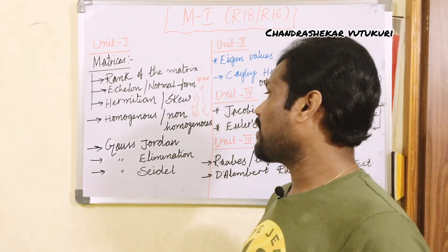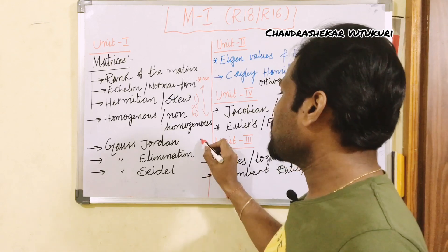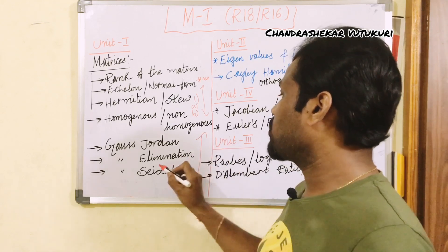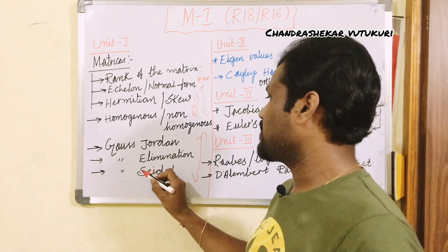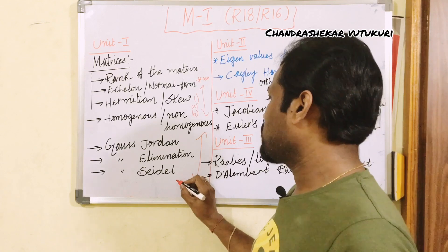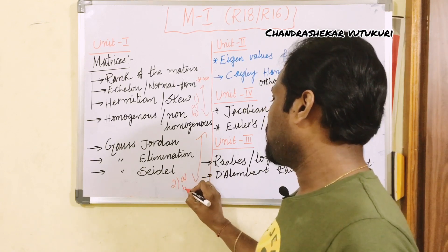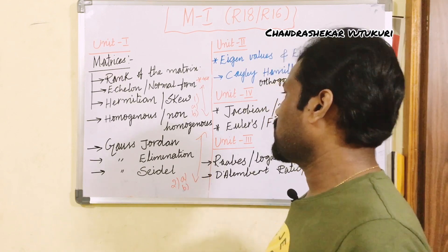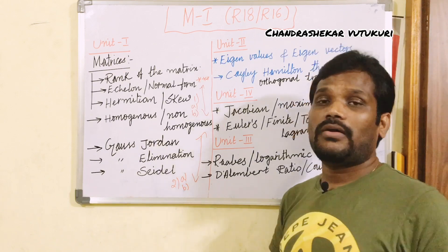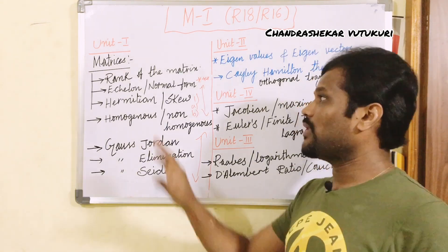The second question is from Gauss Jordan, Gauss elimination, and Gauss-Seidel method. You are supposed to work out each and every problem from this without skipping anything, so that you score good marks. I can assure you that two questions you are going to get from this area.